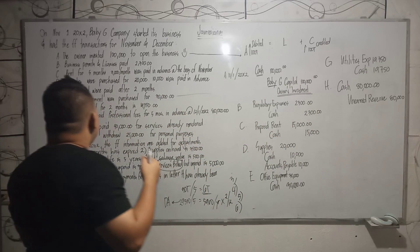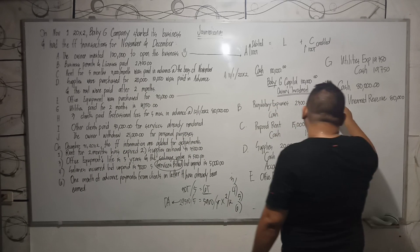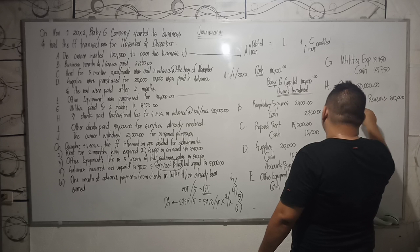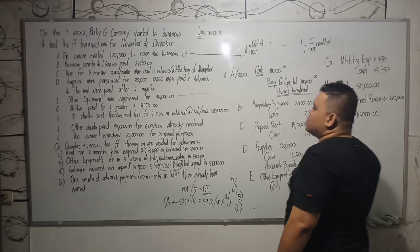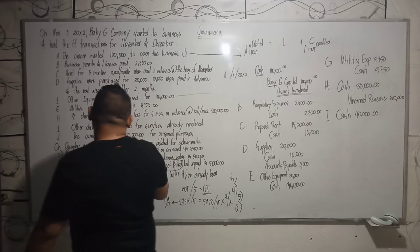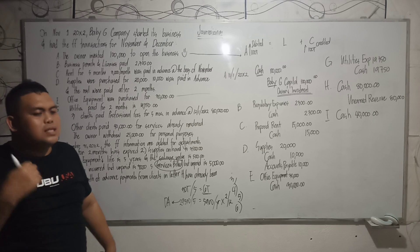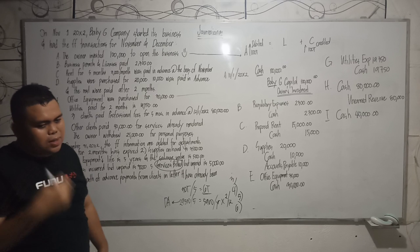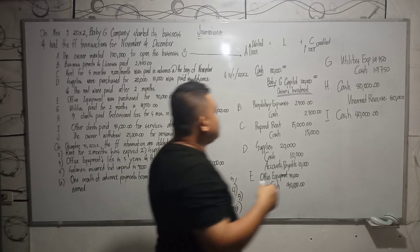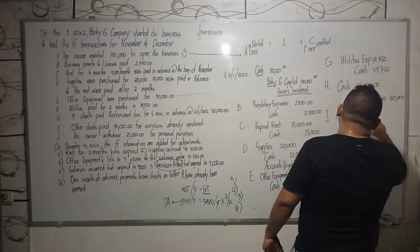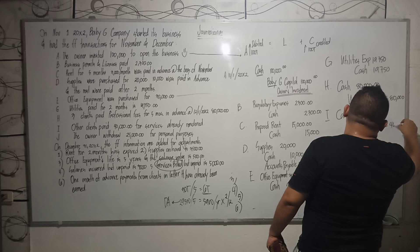Letter I: other clients paid $40,000 for services already rendered. That means you received another $40,000 cash, so debit cash $40,000. Unlike letter H, you have actually earned this money already. So you record it as revenue. Since we are increasing revenue, instead of saying increase, you say credit — credit service revenue $40,000.